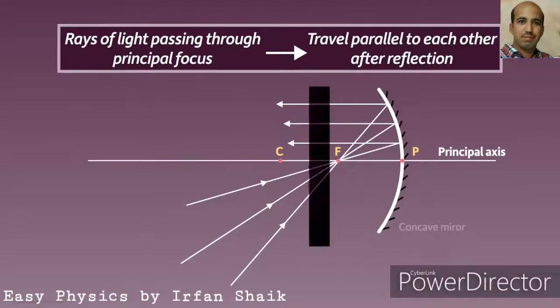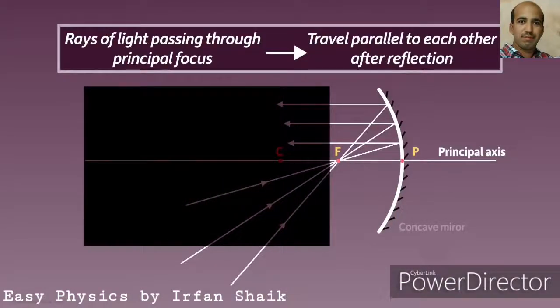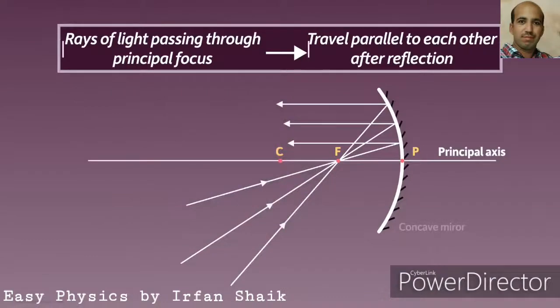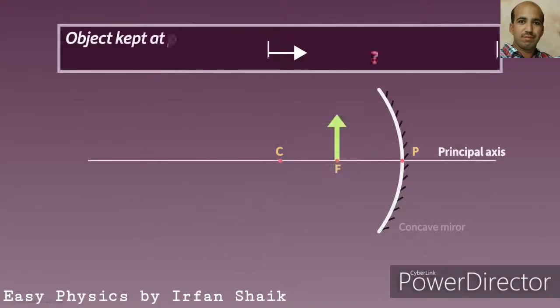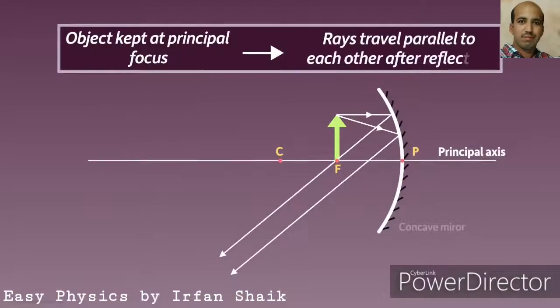This is true at any point behind the principal focus. When the object is placed at the principal focus, after reflection the rays travel parallel to each other, so no image forms in this case.